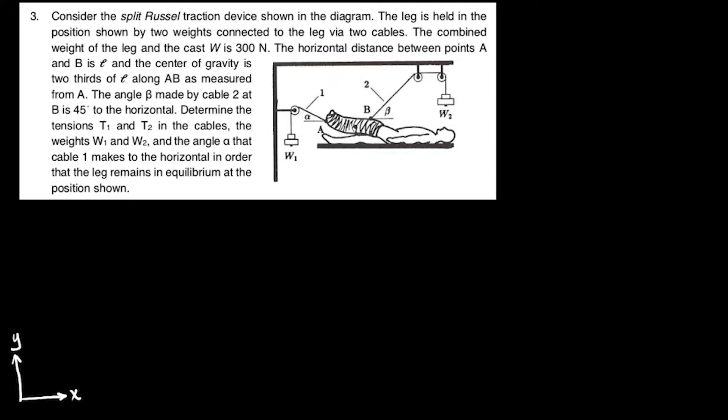Let's stop right here. We know now that the weight of the leg with the cast is 300 newtons, so we can add that to the diagram. The horizontal distance between points A and B is L, and the center of gravity is two-thirds of L along AB as measured from A. We can now add two distances to our sketch: L is between A and B and two-thirds L between A and the center of gravity.